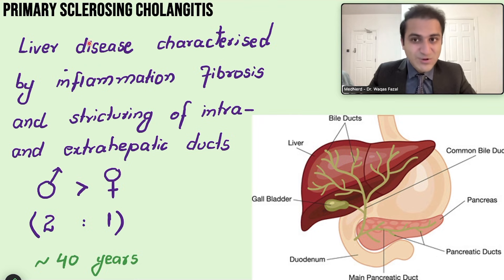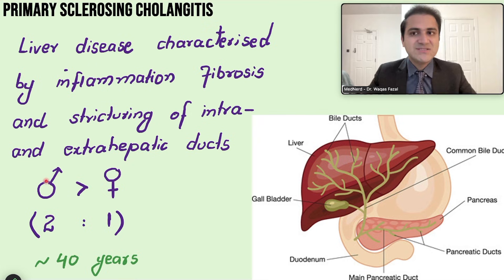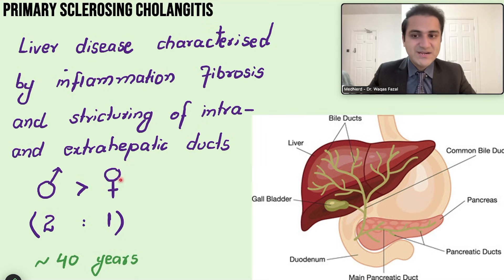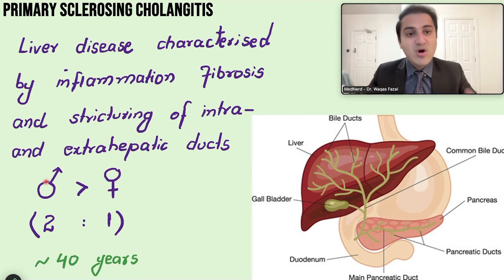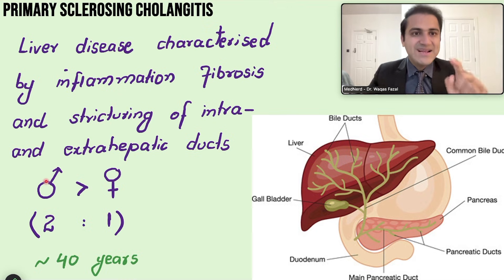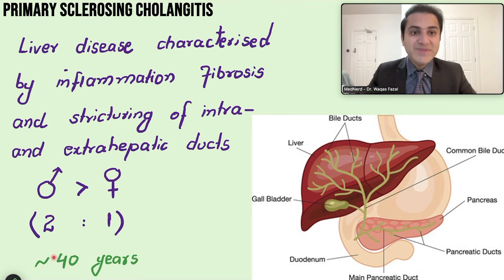To summarize the key differences: primary biliary cirrhosis involves intrahepatic ducts, while primary sclerosing cholangitis involves both intra- and extrahepatic ducts. The median age of patients with PSC is 40 years.